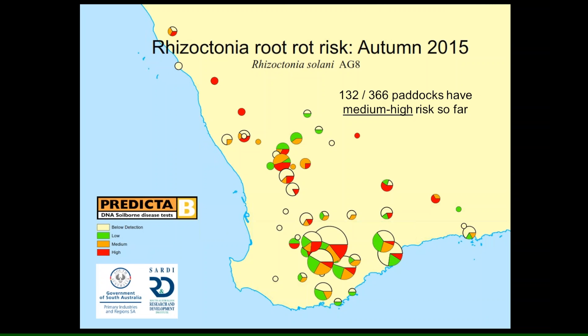We know from autumn this year that Rhizoctonia is spread all across from the north down to the southern region. These are the DNA levels in the soil as determined by Predictor B at Saudi. The orange and the red are the medium and high levels of Rhizoctonia in the soil, and you can see they are spread across the whole region. The bigger the pie chart, the more samples that were sent in.